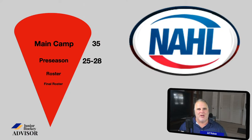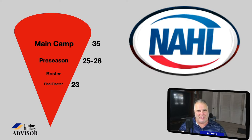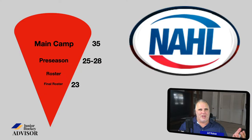Your roster trims down as the preseason goes on, finally ending somewhere right when the games start — maybe a few games into the year — the roster will be trimmed down to 23. That's where you want to be. So it could start out at 100, 150, 200 players at main camp. The final number is 23.